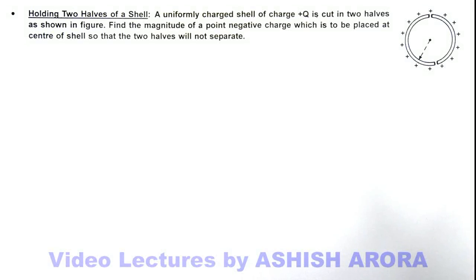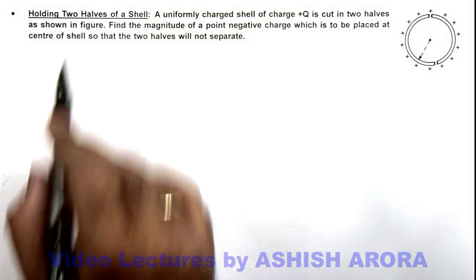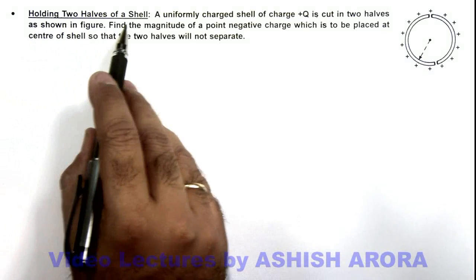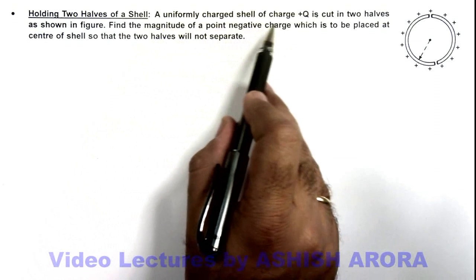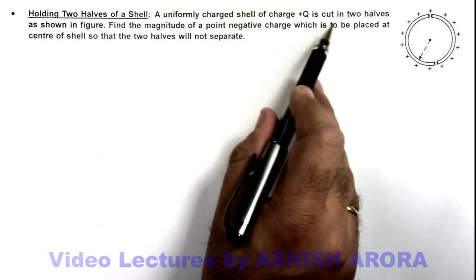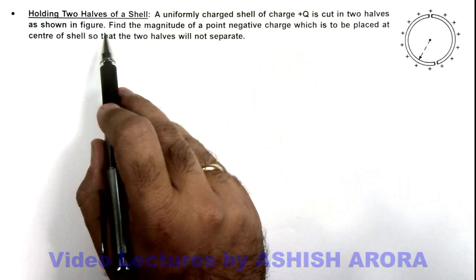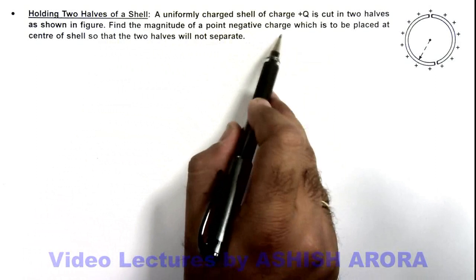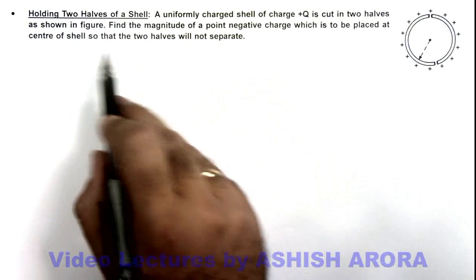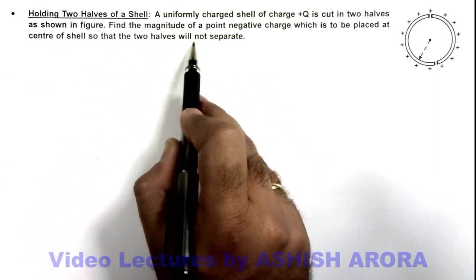In this illustration, we'll study a situation for holding two halves of a shell. Here it is saying, a uniformly charged shell of charge plus Q is cut in two halves as shown in the figure, and we are required to find the magnitude of a point negative charge which is to be placed at the center of shell so that the two halves will not separate.